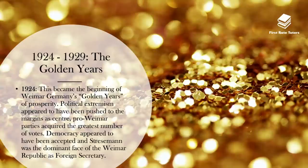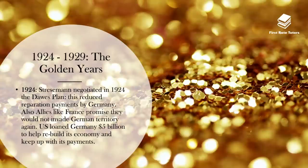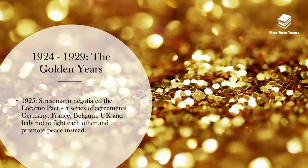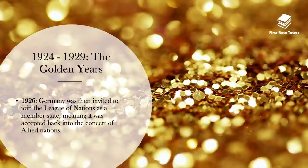As a result of Germany regaining its economic balance, political extremism appeared to have been pushed to the margins as centre, pro-Weimar parties acquired the greatest number of votes. Democracy appeared to have been accepted, and Stresemann became the dominant face of the Weimar Republic as he also became Foreign Secretary. Also in 1924, Stresemann managed to successfully negotiate the Dawes Plan, which reduced Germany's crushing reparation payments, and allies like France promised they would not invade German territory again. The USA also loaned Germany $5 billion in order to help rebuild its economy and keep up with these reparation payments. In 1925, Stresemann negotiated the Locarno Pact, which was a series of agreements between Germany, France, Belgium, the UK and Italy not to fight each other and promote peace instead. Then in 1926, Germany was invited to join the League of Nations as a member state, meaning it was accepted back into the concert of allied nations.